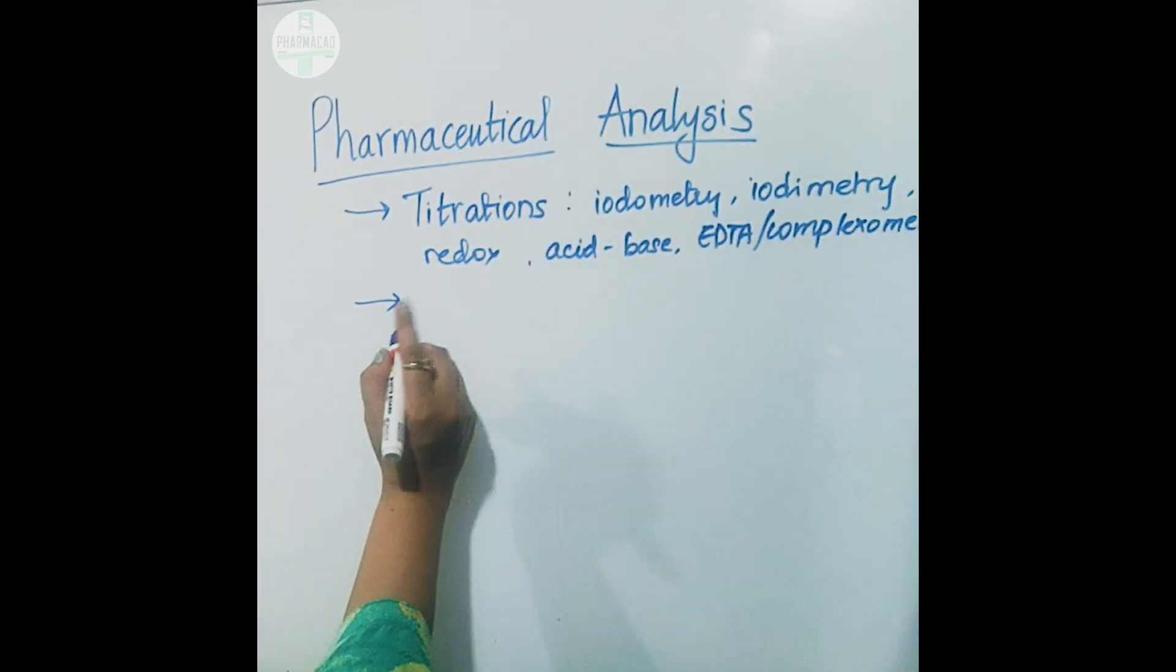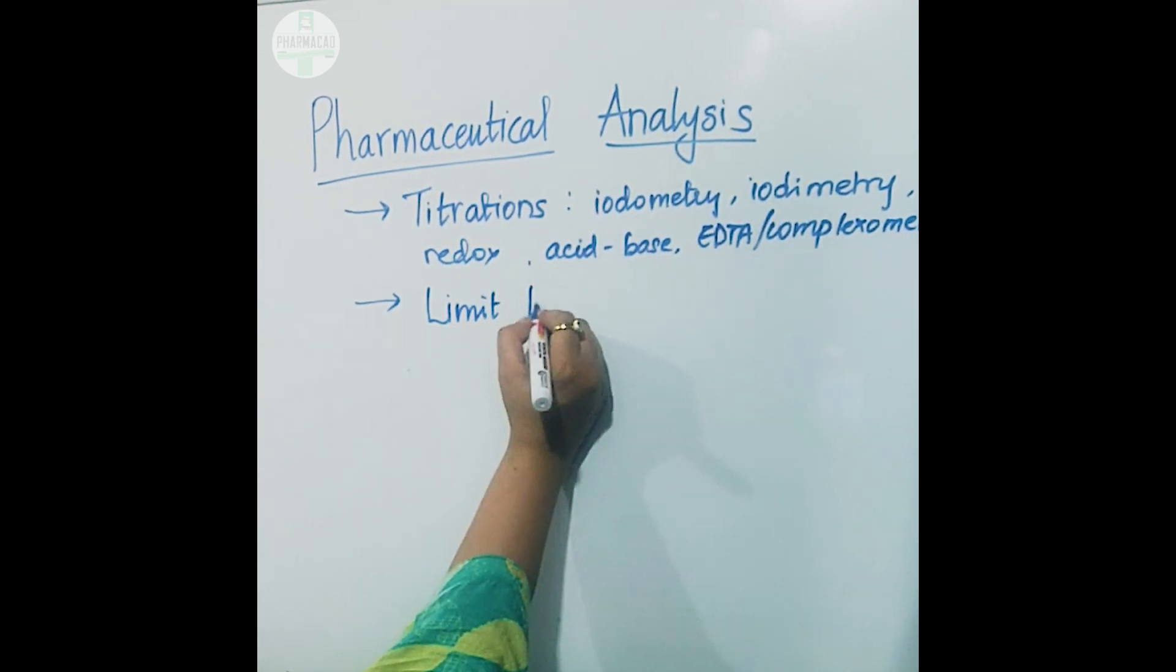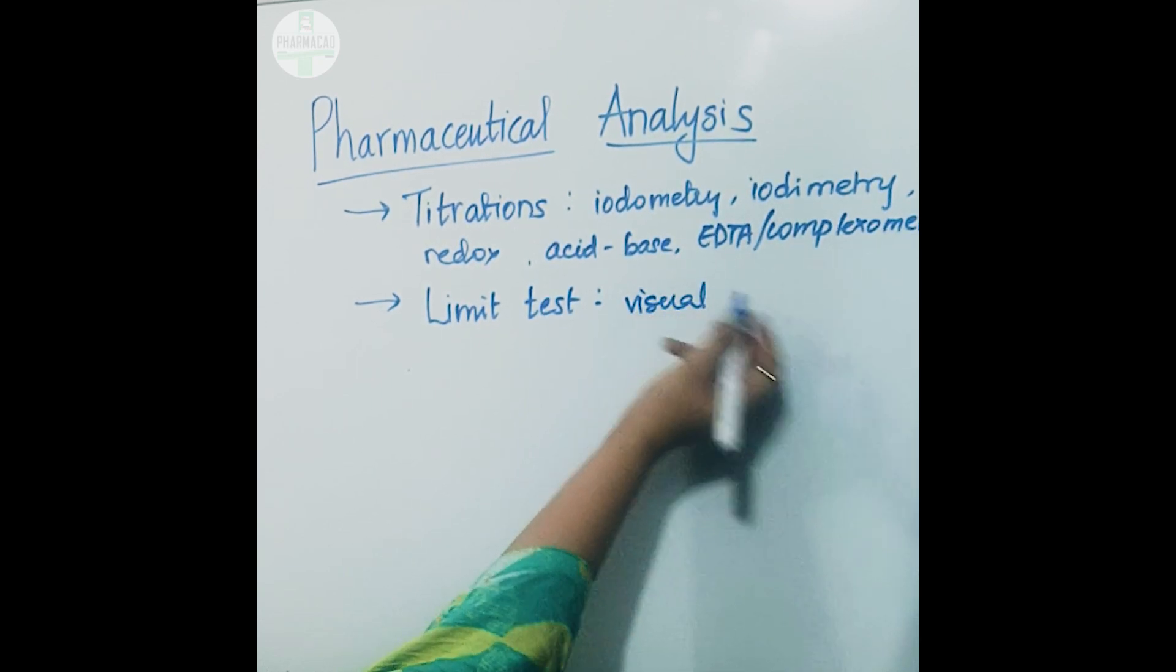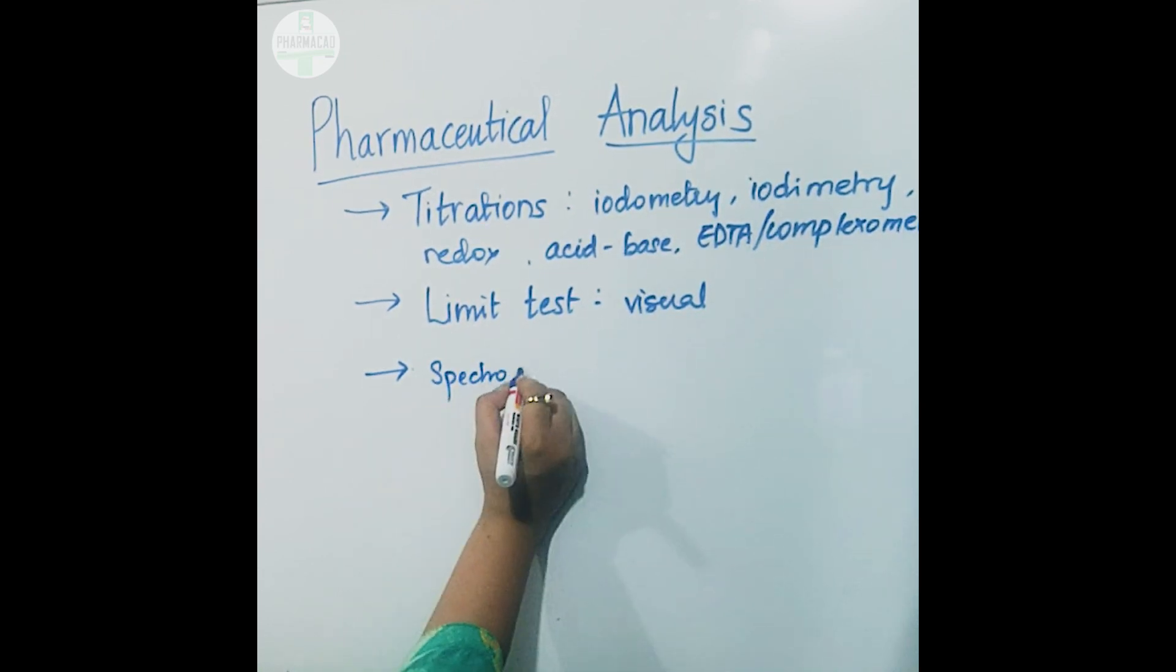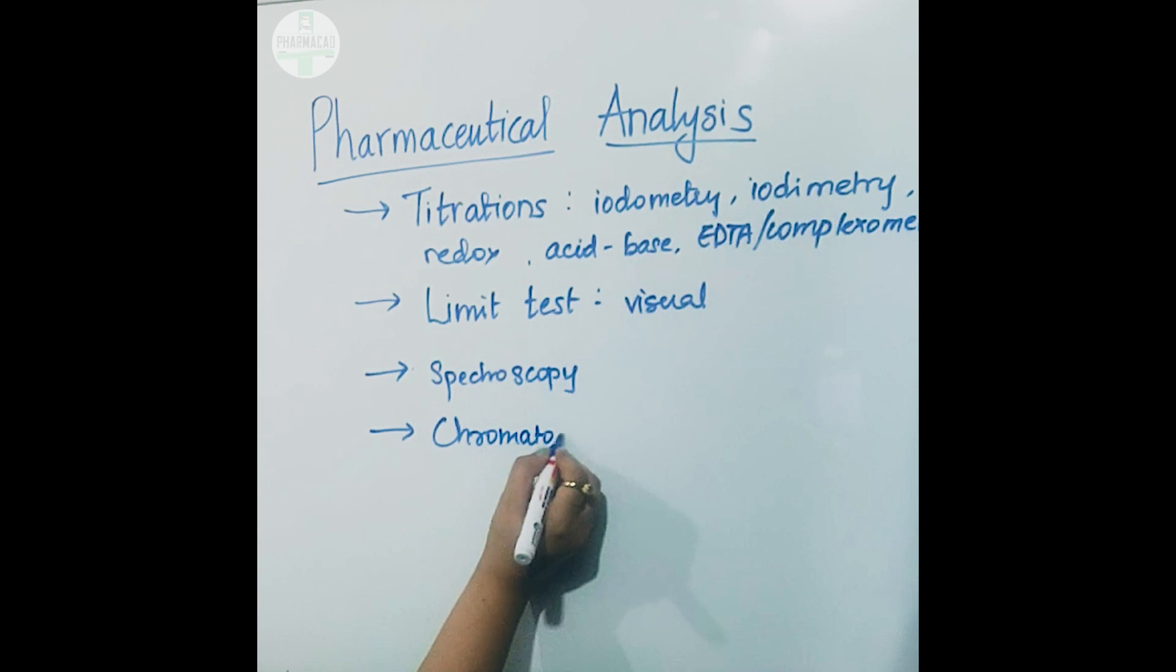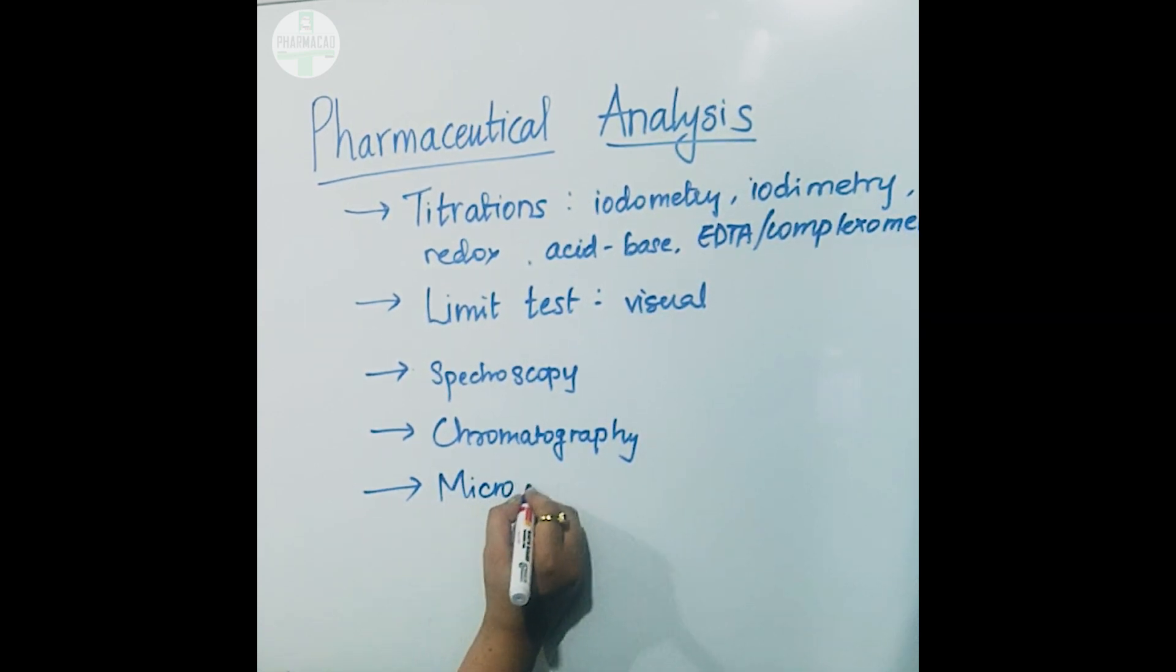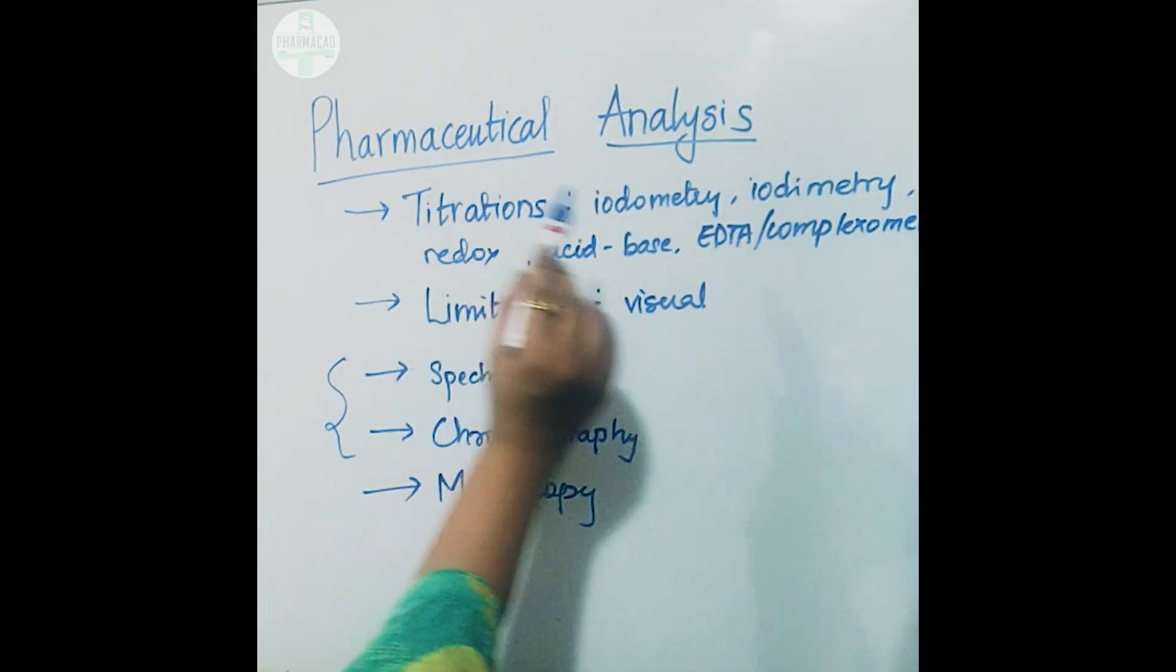Other pharmaceutical analytical methods would include something like limit tests. The common ones are visual tests using Nessler's cylinders. Others include spectroscopies, chromatography. There are analysis using microscopies, the most popular ones.